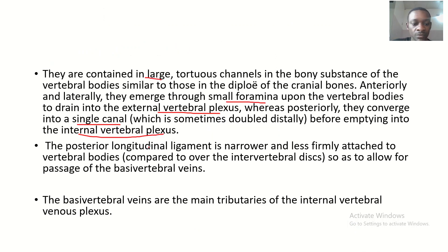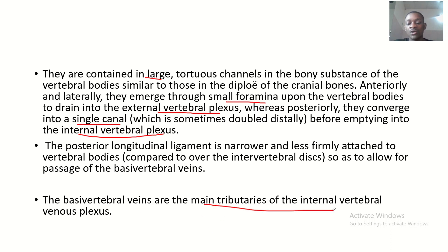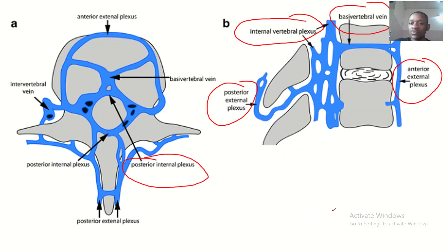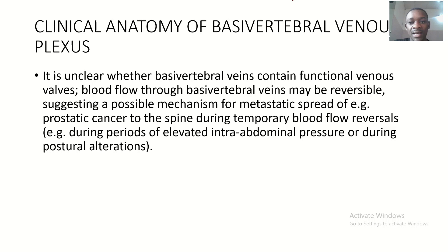The posterior longitudinal ligament is narrower and less firmly attached to the vertebral bodies compared to the intervertebral discs, so as to allow for the passage of the basivertebral veins. The basivertebral veins are the main tributaries of the internal vertebral venous plexus — you can see how they emerge from and drain into the internal vertebral plexus.